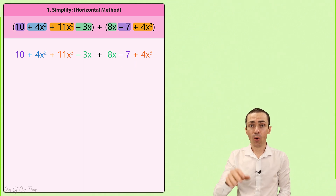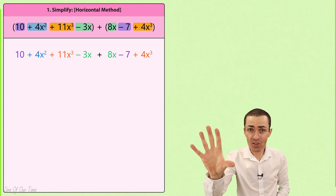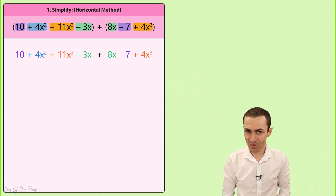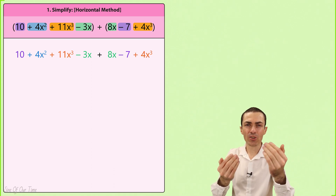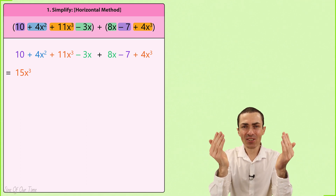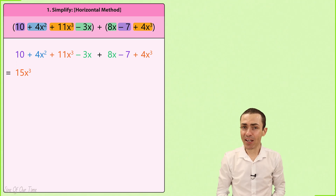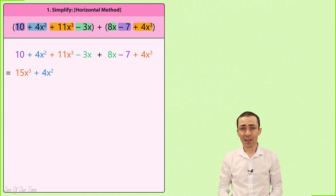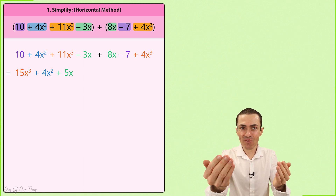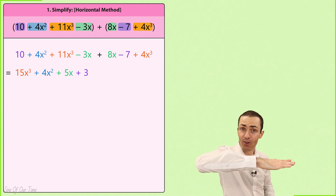Next we just have to add together all of the terms that have the same color, and it is always a good idea to start with the terms that have the highest degree and work our way down to the terms that have the lowest degree. So 11x cubed and 4x cubed add to give us 15x cubed. Unfortunately there is nothing to add to our poor friend 4x squared, but we still have to remember to write it in our answer. Then negative 3x and 8x add to give us 5x, and finally 10 and negative 7 add to give us 3. We have now simplified by adding these polynomials using the horizontal method.